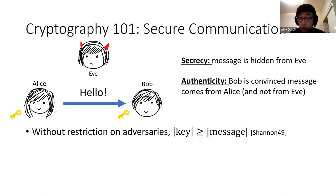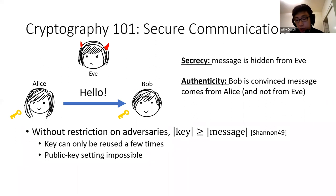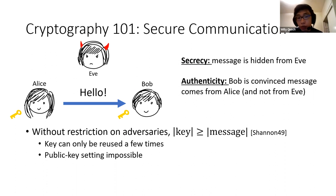However, it turns out that in general this is not possible. If we don't have any kind of assumptions on the adversary, Shannon tells us that this is impossible in general. More precisely, there will be strong restrictions on how good the schemes will be — you won't be able to use the key many times. For a one-time pad, you can only use the key once and throw it away. And public key agreement is impossible — cryptography won't help you generate a fresh key afterwards.